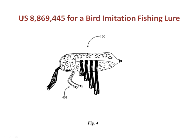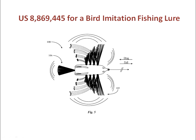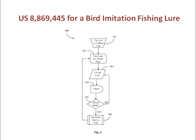Figure four is another elevation view of the bird lure, showing an optional embodiment of the invention, having legs and feet, not seen in the embodiments shown by the previous figures. Figure five is an overhead plan view of the lure of figure one, showing how certain elements may move with the lure floating on a surface of water.